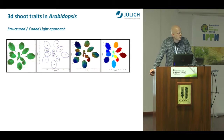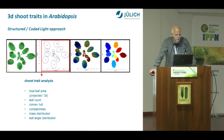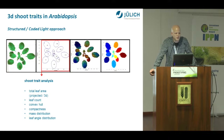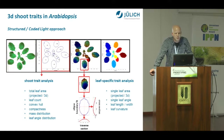We then developed an image processing pipeline to extract more traits from these data. The first step is identifying single leaves for trait estimation at the leaf level. At the plant level we can analyze leaf area, leaf count, convex hulls, and leaf angle distribution. At the single leaf level we can go further with individual leaf area, leaf angle, leaf length, and other shape parameters like leaf curvature.